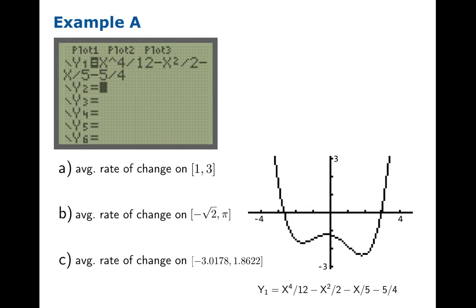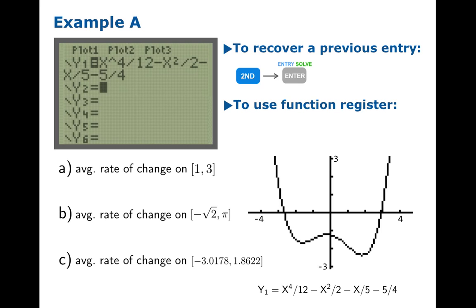Now we're going to bring in the graphing calculator, and there are two tricks we're going to use. Once you do a calculation on the home screen, it's stored in a history, and you can recall it using the keystroke second enter, and it'll help you go through the previous 20 or so commands. Another trick is, if you've taken the trouble of storing a function into a Y register, you should be able to gain access to that register wherever you are using the keystrokes here. You go to the variables button, then the submenu Y variables, function, and finally Y1.